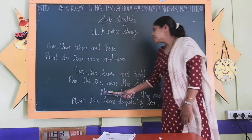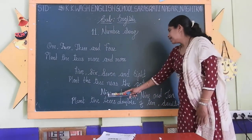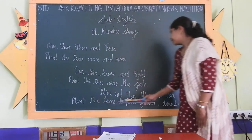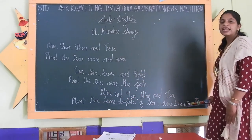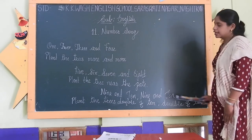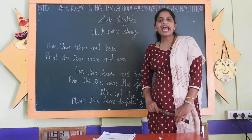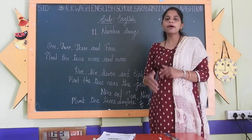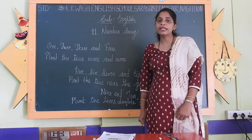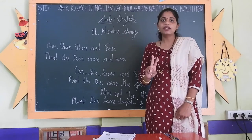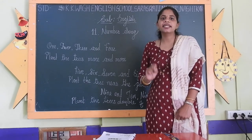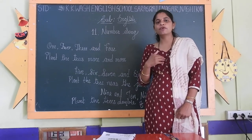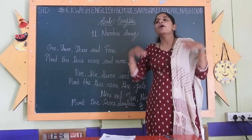Now, the last stanza. 9 and 10, 9 and 10, plant trees double of 10. It means we have to plant two times 10, that is 20 trees. It means we have to plant more and more trees.